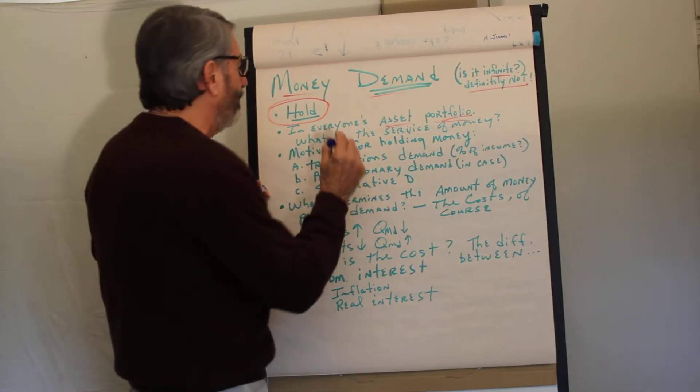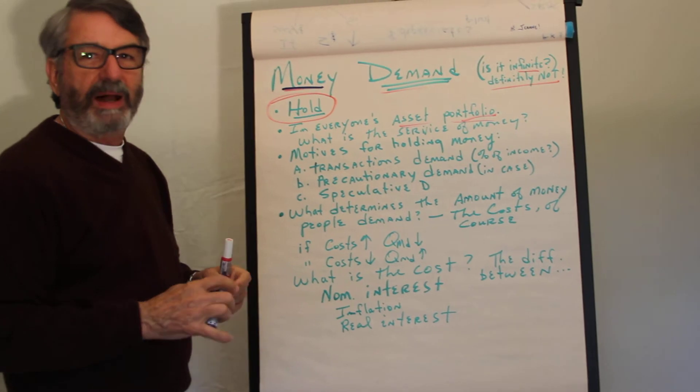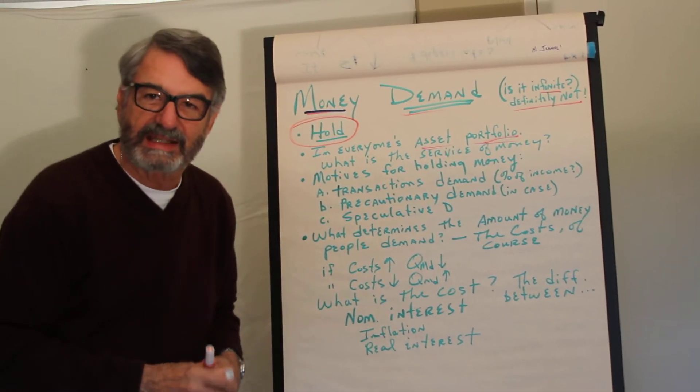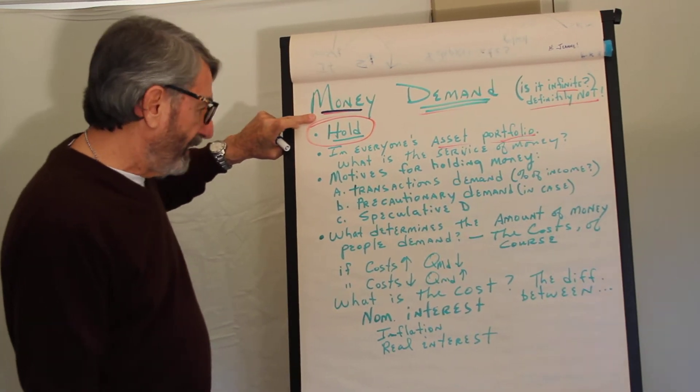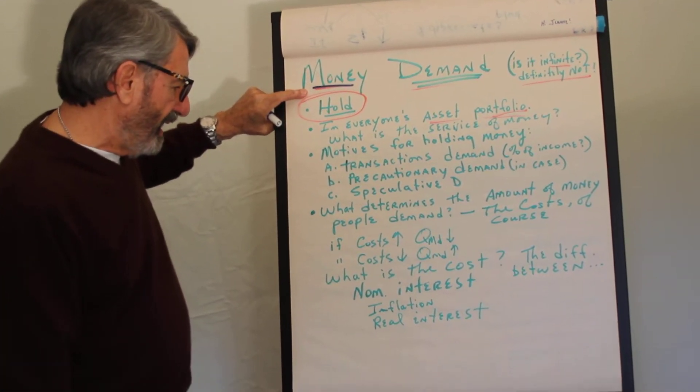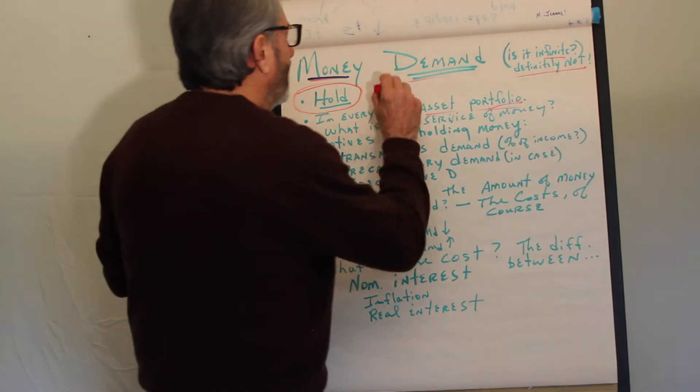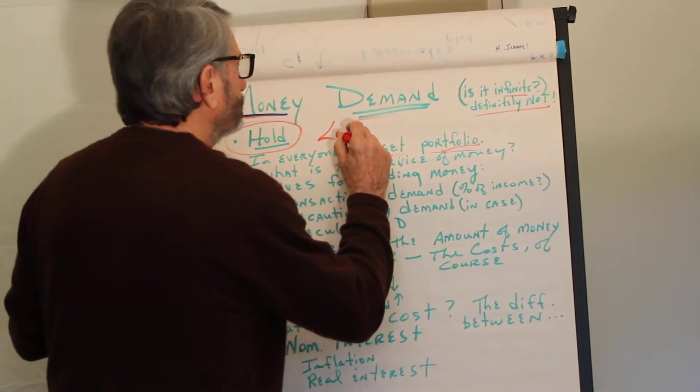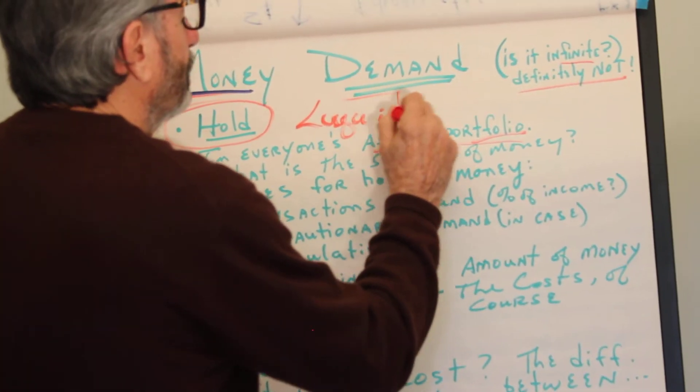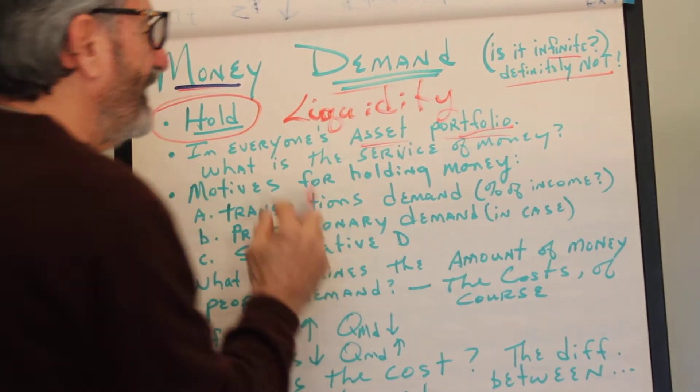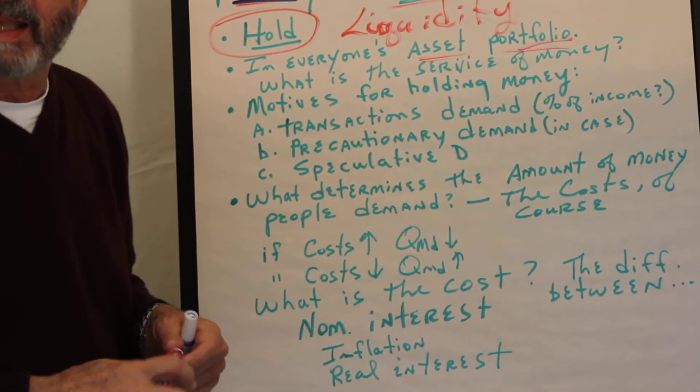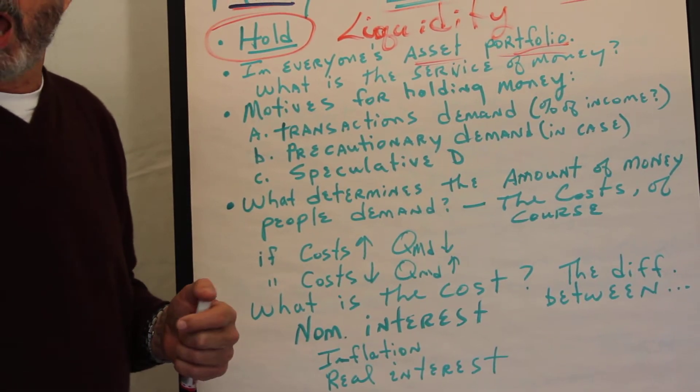Why do people keep money? You can't sleep on it. You can't drive it. You can't sit on it. Money has one purpose. The purpose of money is liquidity. Liquidity means that you can use money to exchange for other assets. It is the tool for the job.